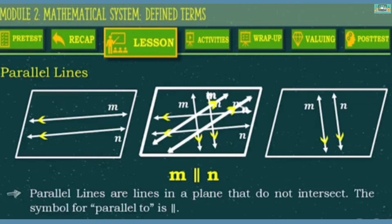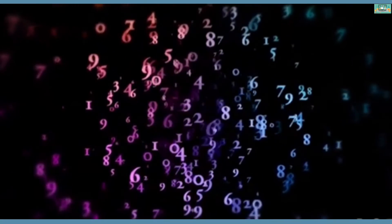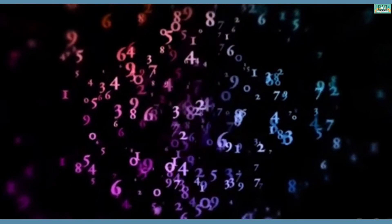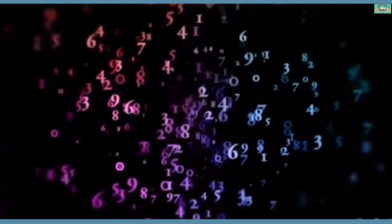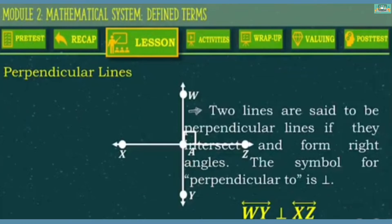The yellow arrowheads indicate that the two lines are parallel. Now, what if the two lines intersect and form a right angle? This is what you call perpendicular lines. Perpendicular lines are lines that intersect and form a right angle. The symbol for perpendicular is like an inverted capital letter T.